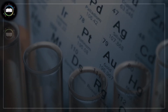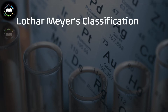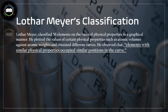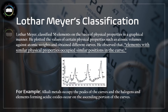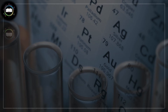Next is Lothar Meyer's classification. In 1869, German chemist Lothar Meyer classified 56 elements arranged in groups one to eight. Meyer plotted values of certain physical properties such as atomic volumes against atomic weights and obtained some curves. From those curves he observed that elements with similar physical properties occupied similar positions — for example, alkali metals such as lithium, sodium, and potassium were at the top.